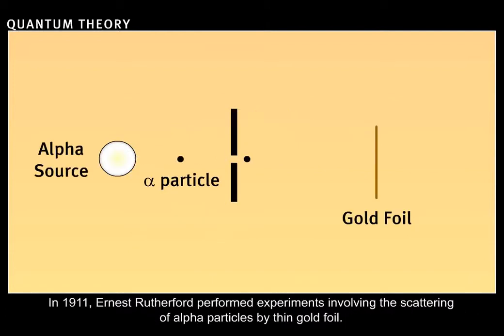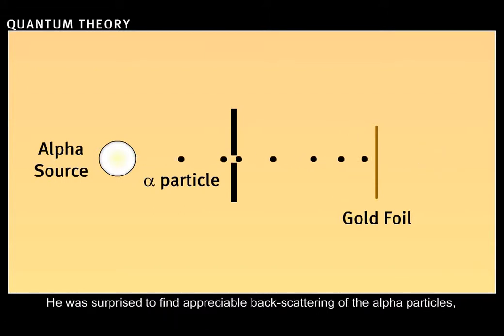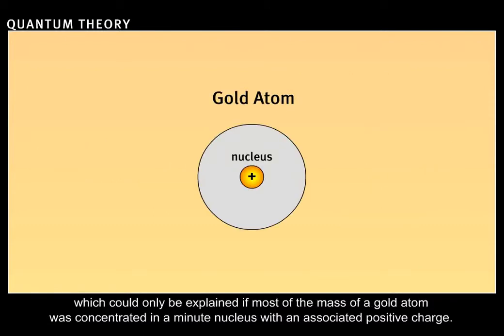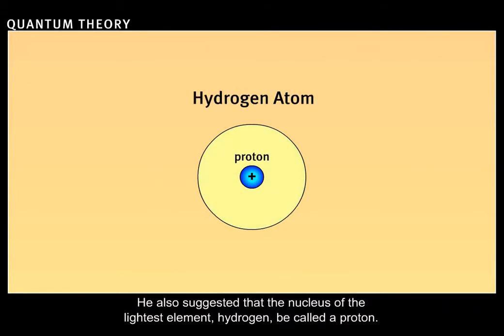In 1911, Ernest Rutherford performed experiments involving the scattering of alpha particles by thin gold foil. He was surprised to find appreciable backscattering of the alpha particles, which could only be explained if most of the mass of a gold atom was concentrated in a minute nucleus with an associated positive charge. He also suggested that the nucleus of the lightest element, hydrogen, be called a proton.